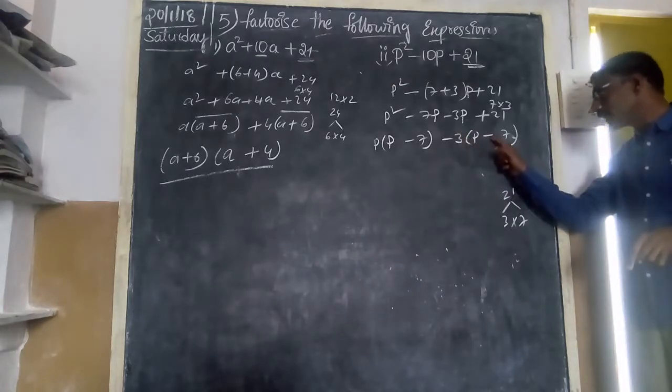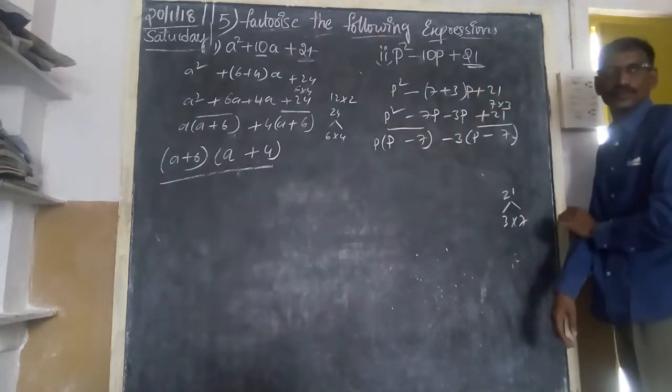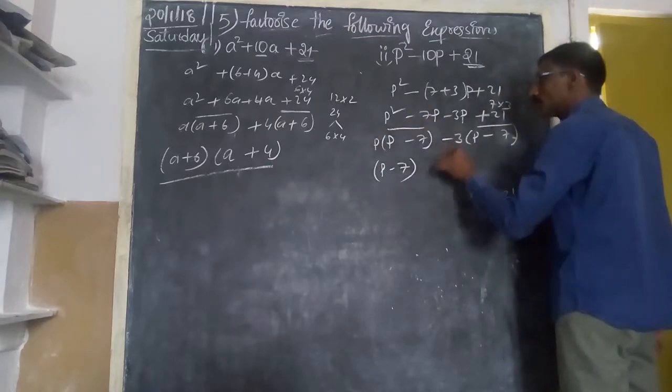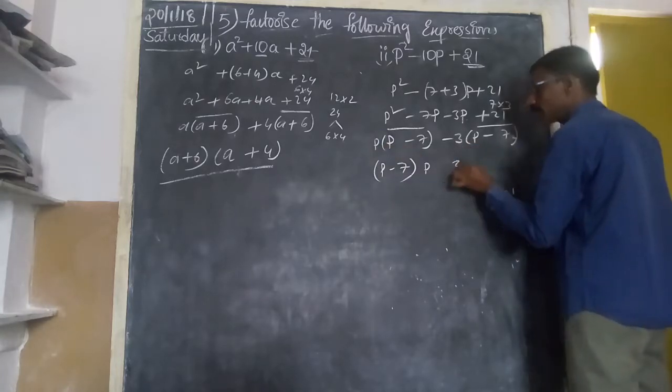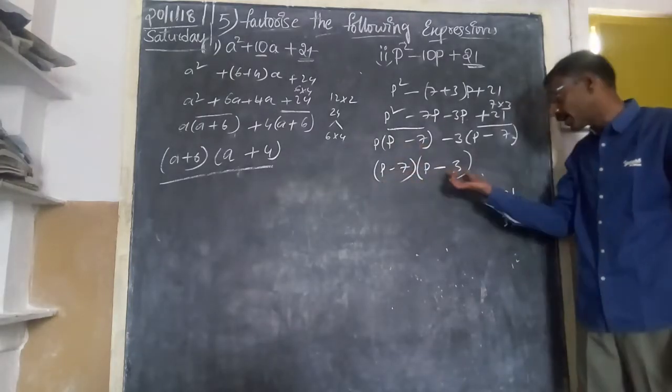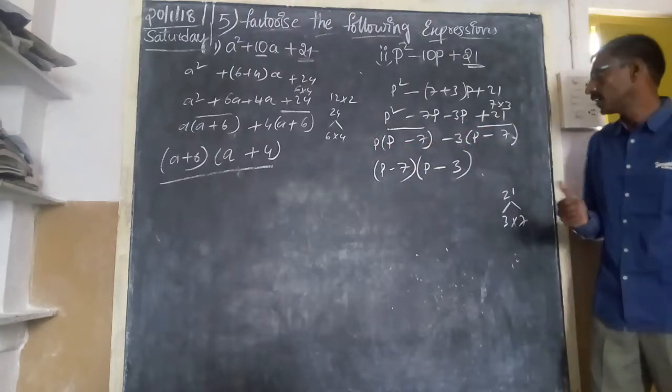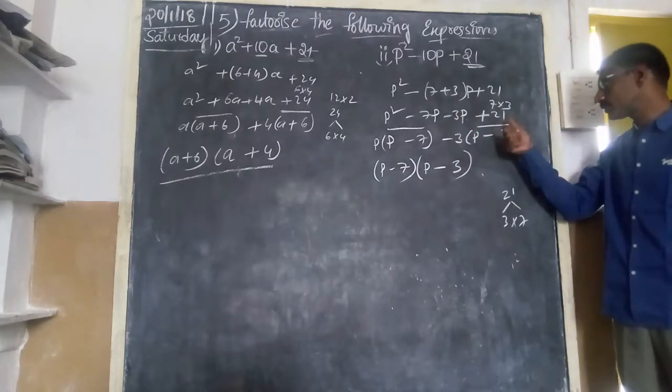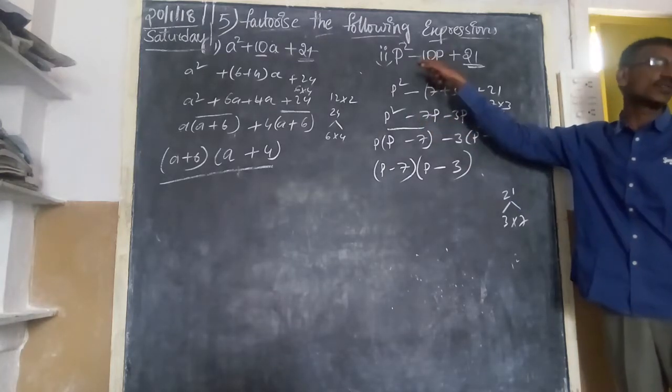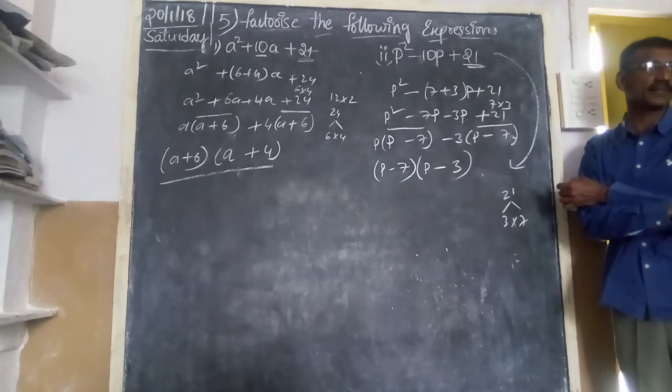So, p minus 7 and here we have minus 3. (p-7)(p-3). It is a great expression, is it clear? Yes.